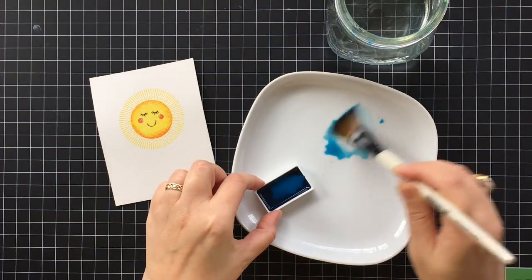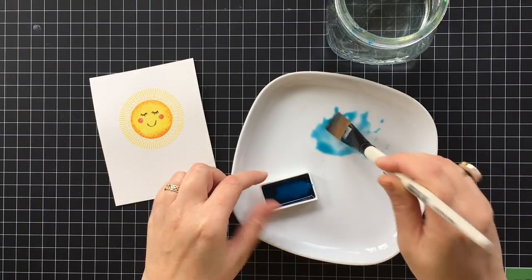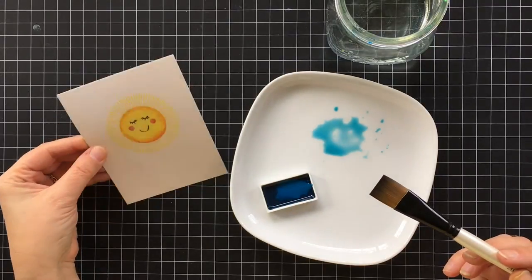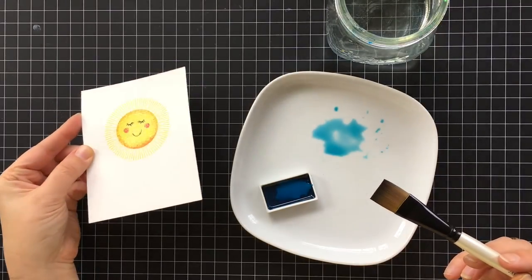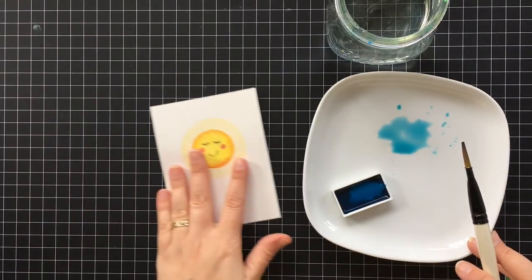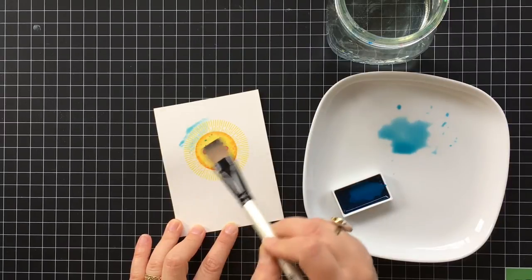I like spreading out some color on the plate like this and adding a lot of water because this way I'm not using it straight out of the pan. So it makes it where I can keep going back and picking up more color from this and I'm not going to get it too dark or too light.